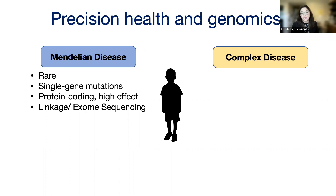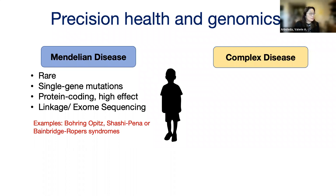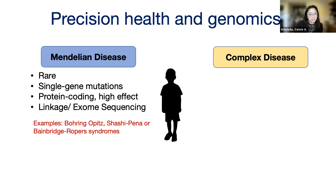Usually when we're thinking about Mendelian disorders, we find these disorders and the genes that cause them by linkage analysis in large families. More recently with the advent of next generation sequencing, we use exome sequencing. Examples of Mendelian disorders include ASXL-related disorders: Bohring-Opitz, Shashi-Pena, and Bainbridge-Ropers. They're all considered Mendelian diseases in that there's one gene that's mutated and that mutation is necessary and sufficient to cause disease.